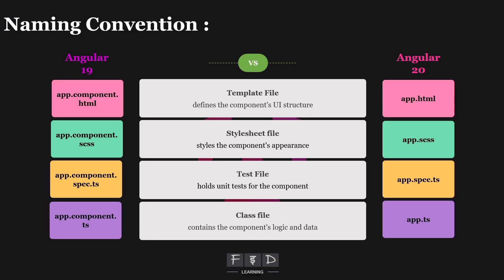To recap, the Angular team has dropped the component prefix from each file by default. To demonstrate this change, we created a new Angular 20 project and generated a user component using the CLI command. As expected, we got the four standard files but without the component prefix. Now before we dive into the main topic, let's quickly wrap up the naming convention changes for services, directives, and pipes, which were missed in the last section.